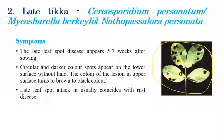The main difference between Early Tikka and Late Tikka is the yellow halo. In Early Tikka, spots are surrounded by a circular yellow halo, whereas the yellow halo is absent in Late Tikka. In later stages, Late Tikka can coincide with rust disease. We can differentiate them: if there is a yellow halo it is Early Tikka; if there is no yellow halo and symptoms are mainly on the lower surface, it is Late Tikka.